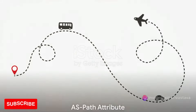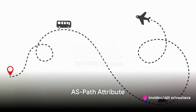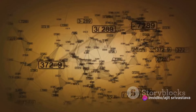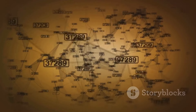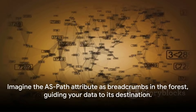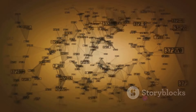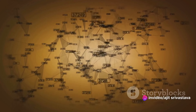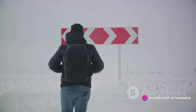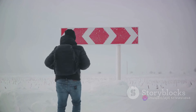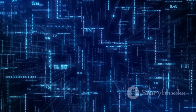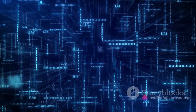Begin with the most well-known attribute: the AS path. This attribute records the path data takes from one network to another. It's like the breadcrumbs Hansel and Gretel left in the forest, but instead of leading to a witch's house, it leads your data to its destination. The AS path can also influence the route selection process — if there are multiple paths to the same destination, the one with the shortest AS path gets the nod.